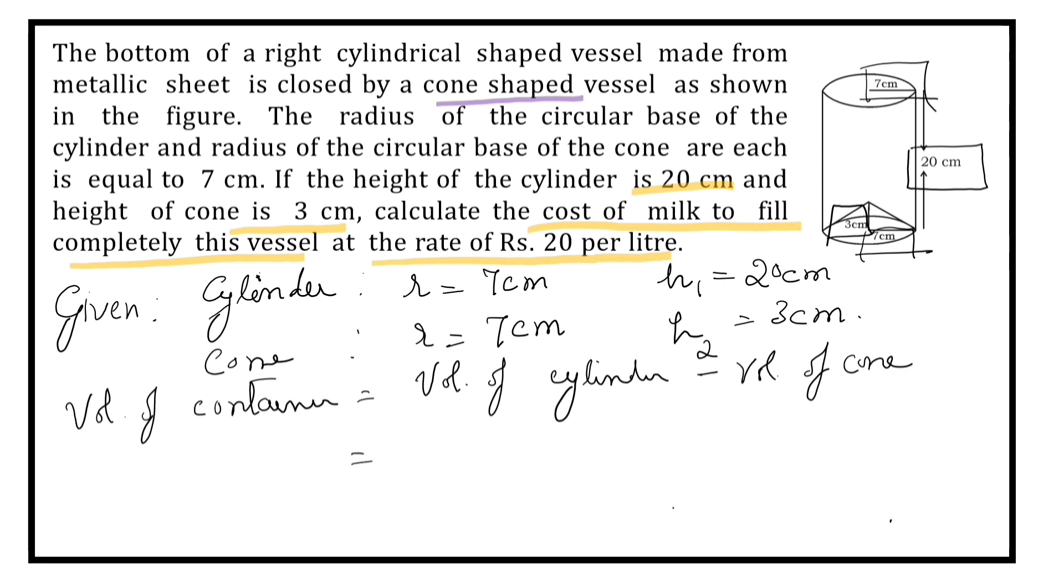What is the volume of the cylinder? We know it. Pi R square H1. Here we have taken height as H1. Minus, what is volume of cone? We know it. It is 1 by 3 pi R square H2.